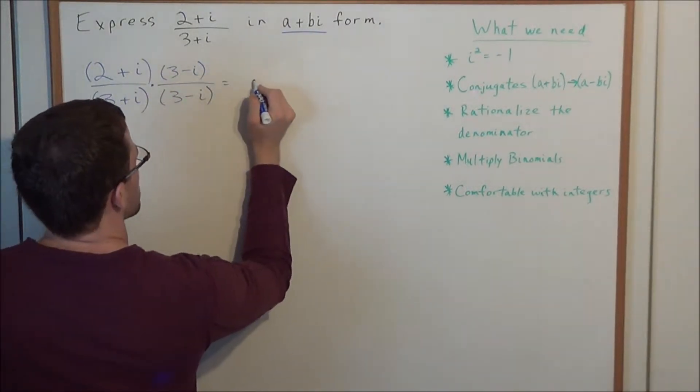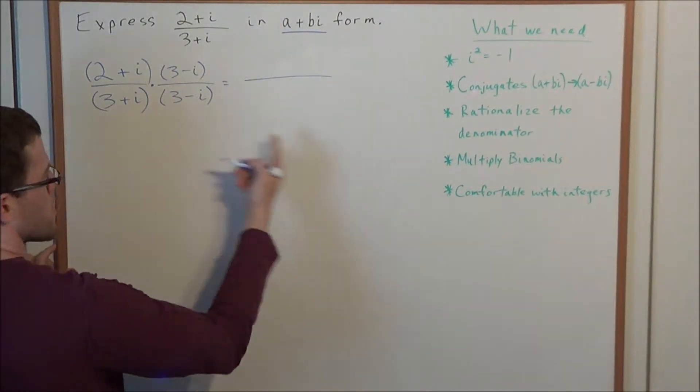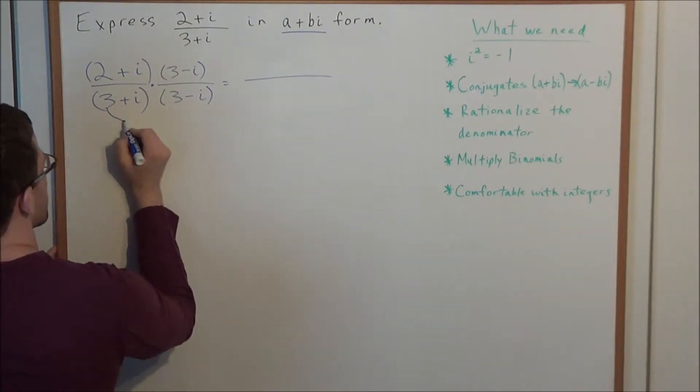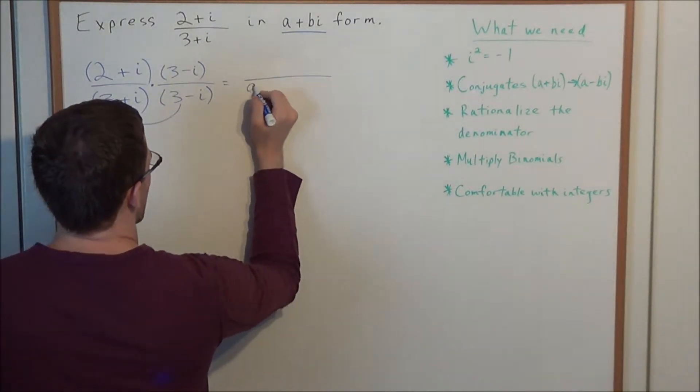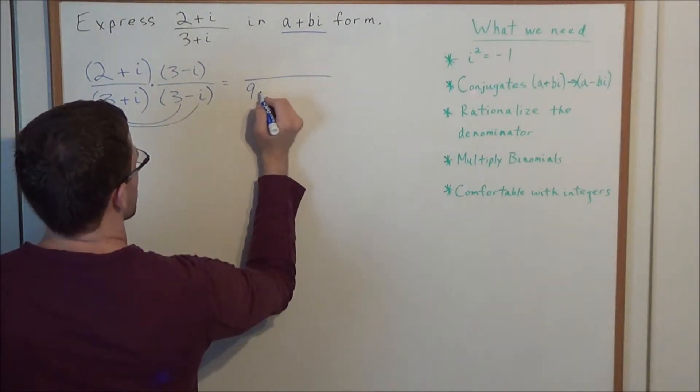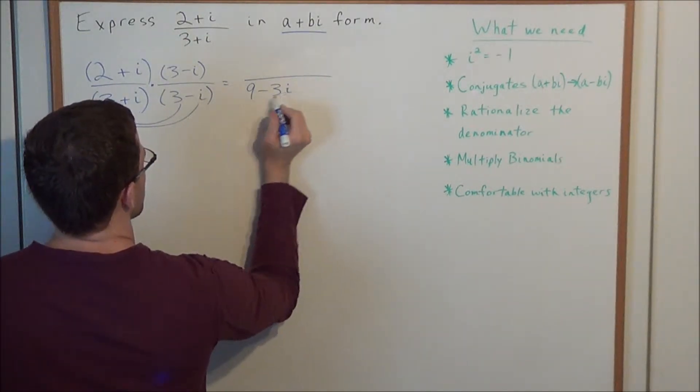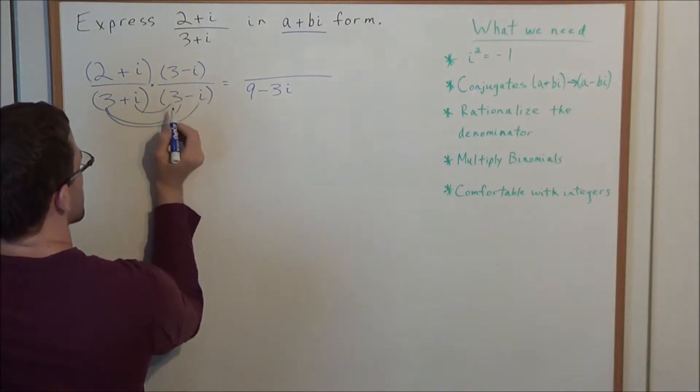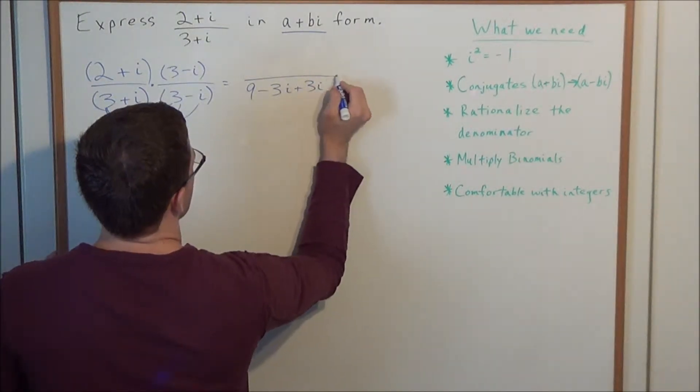So now at the next step, what do we have? We need to multiply the binomials together. We have positive 3 times positive 3 is a positive 9. We have positive 3 times a negative i is a negative 3i. We have positive i times positive 3 is a positive 3i.